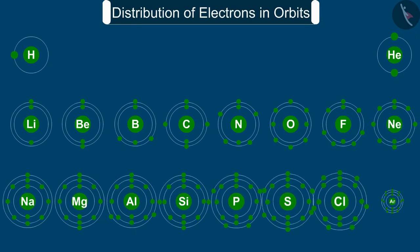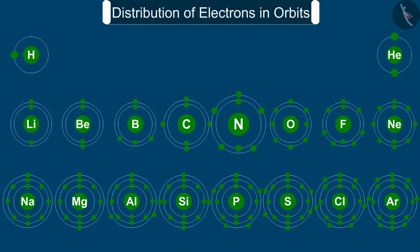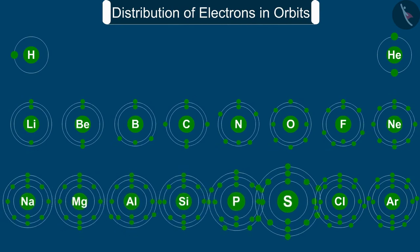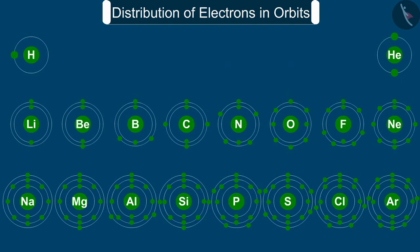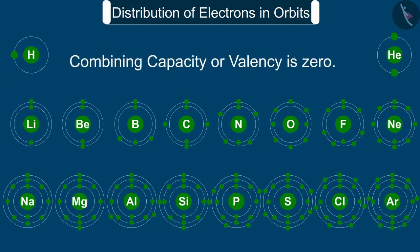The atomic structure of the first 18 elements is shown schematically here. We have learned how the electrons in an atom are arranged in different shells or orbits. The electrons present in the outermost shell of an atom are known as the valence electrons. We also know that the outermost shell of an atom can accommodate a maximum of 8 electrons. It was observed that the atoms of elements having a completely filled outermost shell show little chemical activity — in other words, their combining capacity or valency is 0.